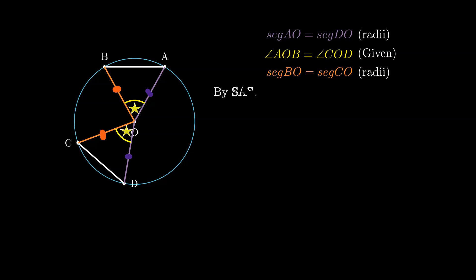And we notice that for the triangles AOB and DOC, two corresponding pairs of segments and the angles sandwiched between them are all congruent. And so we can say that triangle AOB is congruent with triangle DOC by the SAS test of congruency. And so we are almost there.